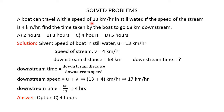A boat can travel with a speed of 13 km/h in still water. If the speed of the stream is 4 km/h, find the time taken by the boat to go 68 kilometers downstream. Downstream distance is 68 km and we need to find the downstream time using: time equals distance divided by speed. If we know the downstream speed, we can calculate the downstream time.